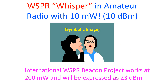Decibels relative to a milliwatt is mentioned as dBm. 1 watt would be 10 to the power of 3 milliwatts, and hence expressed as 30dBm. In a related context, milliwatt is operating with power less than a watt. A power of 20dBm would mean 100 milliwatts. The International WSPR beacon project works at 200 milliwatts and will be expressed as 23dBm.